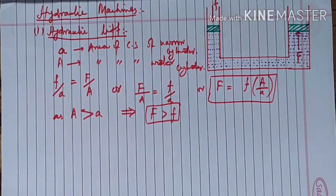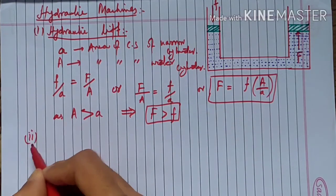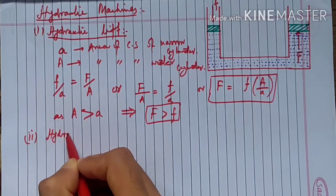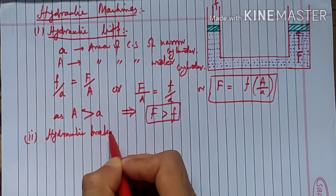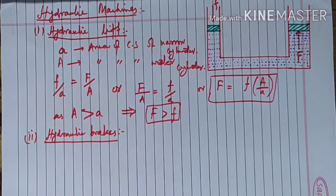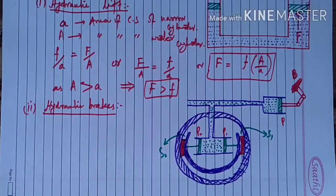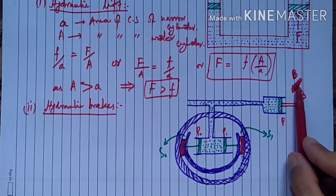The second machine is the hydraulic brake. This is the brake we apply in vehicles, and it is also based on Pascal's law. Let's look at the construction diagram of the hydraulic brake. The foot pedal used to apply the brake is called the brake pedal.